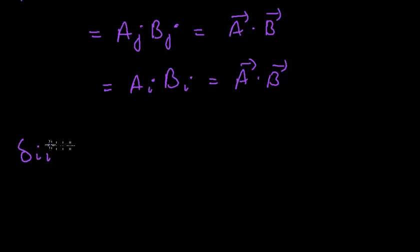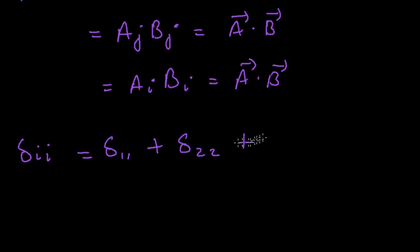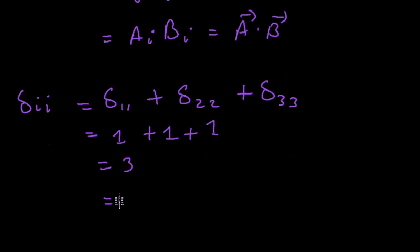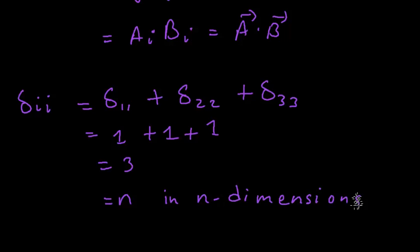Also, δ_ii — with i appearing twice as a dummy index — equals δ_11 + δ_22 + δ_33, which is 1 + 1 + 1 = 3. So δ_ii equals 3 in three dimensions. If working in four dimensions it would be 4, and in n dimensions it would be n. Thanks for watching — please like, comment, and subscribe!